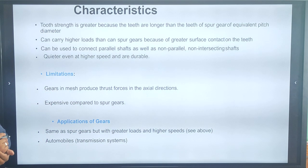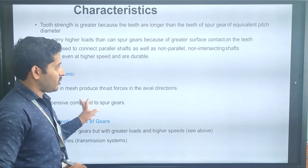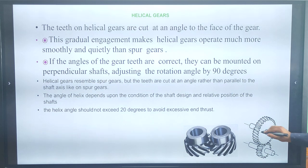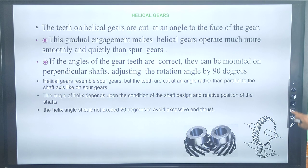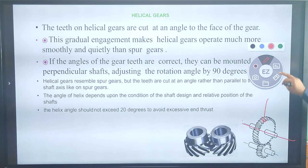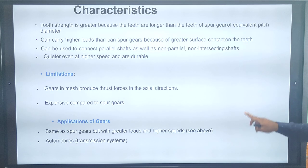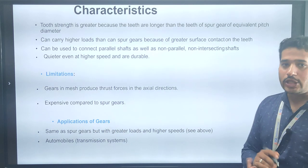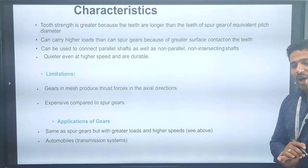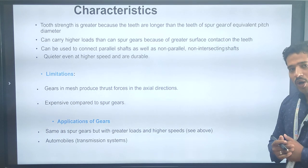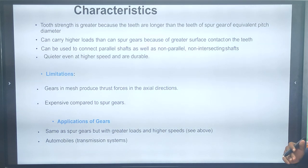The limitation of helical gear: gears in mesh produce thrust force in the axial direction, which is the main limitation. Also, helical gear is more expensive than spur gear. The application of helical gear: we use it to carry heavier loads in automobile applications, and the speed of helical gear is greater than spur gear.